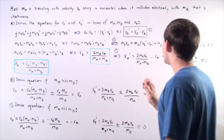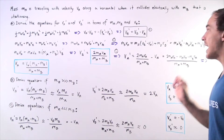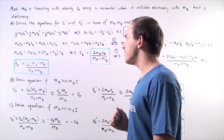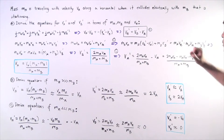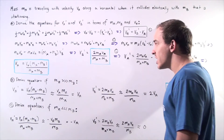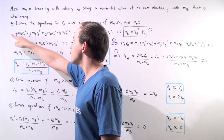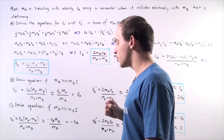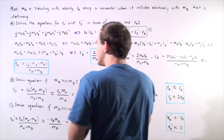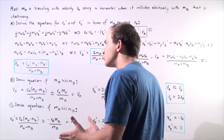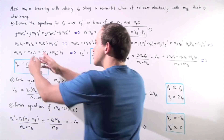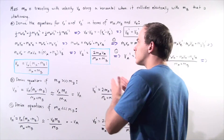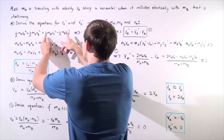Note that object B is stationary, meaning the initial velocity VB before our collision takes place is zero meters per second. We also know our collision is elastic, so that means we have two equations: the conservation of kinetic energy equation and the conservation of momentum equation. The initial kinetic energies of the two objects before the collision equals the final kinetic energy after the collision.